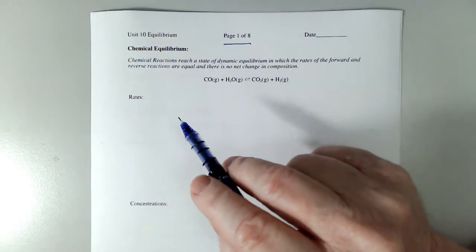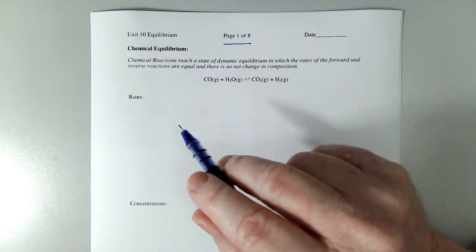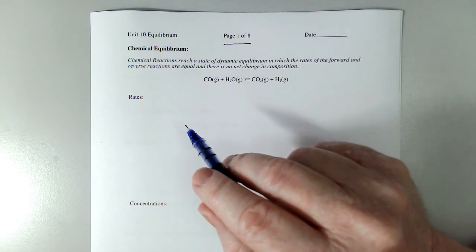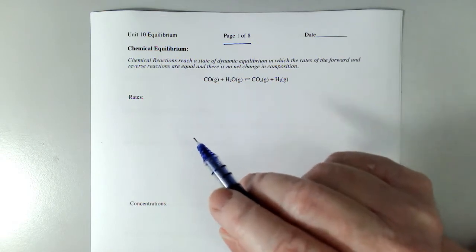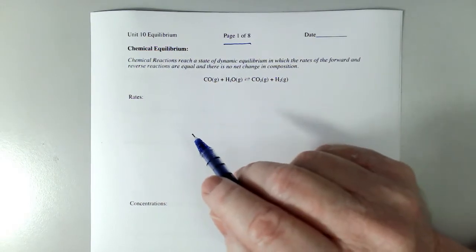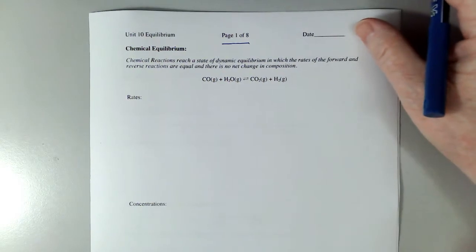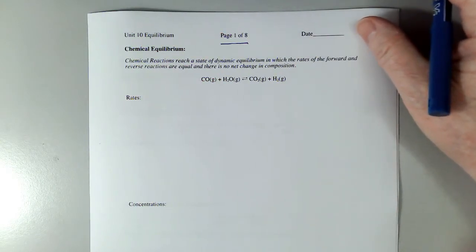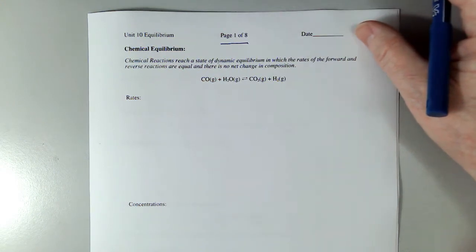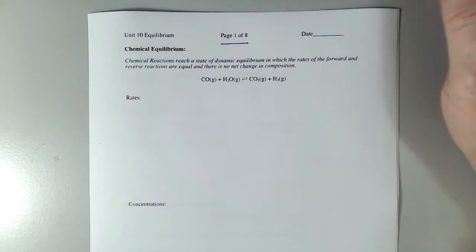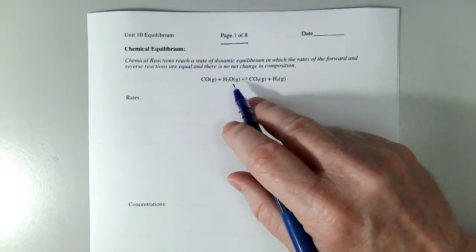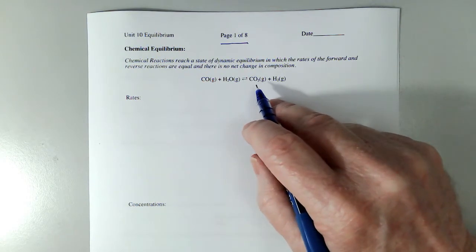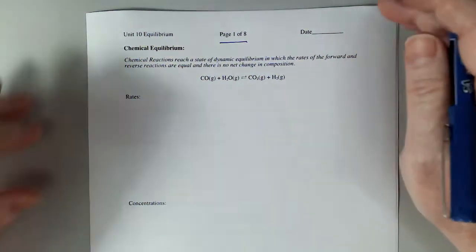Chemical reactions reach a state of dynamic equilibrium in which the rates of the forward and reverse reactions are equal, and there is no net change in the composition of the equilibrium mixture. Basically, we're defining chemical equilibrium as when the rate of the forward reaction equals the rate of the reverse reaction. So I have an example here. Carbon monoxide gas and water gas form an equilibrium with CO2 gas and H2 gas.